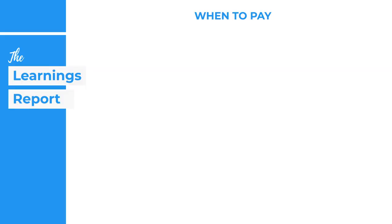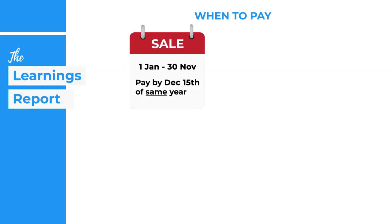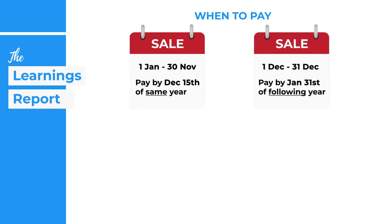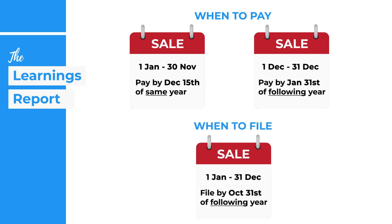Remember: you pay your taxes in the year you dispose of your assets and file the return the following year. If you sell between January 1st and November 30th, you must pay your tax bill by December 15th of that year. If you sell between December 1st and December 31st, you have until January 31st of the new year to pay. You then file your CG1 return before October 31st of the new year. In our example, we're filing in 2021 for the 2020 tax year.